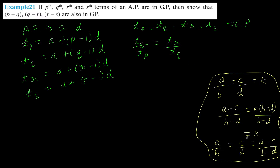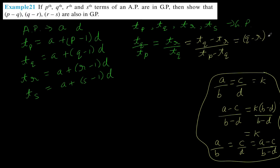We use this fact: TQ by TP equals (TQ minus TR) divided by (TP minus TQ). Now TQ minus TR gives us (Q minus 1 minus R plus 1) times D, which is (Q minus R) times D. And TP minus TQ gives us (P minus Q) times D. The D cancels out, so TQ by TP equals (Q minus R) by (P minus Q).